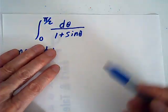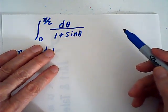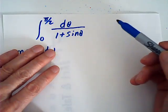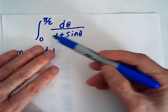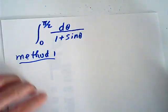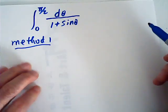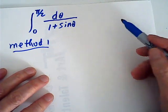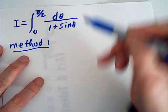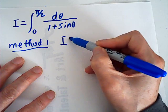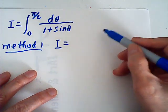Let's do one definite integral: dθ over (1 + sinθ), from 0 to π/2. I want to present three methods here. Method 1 is just straightforward.